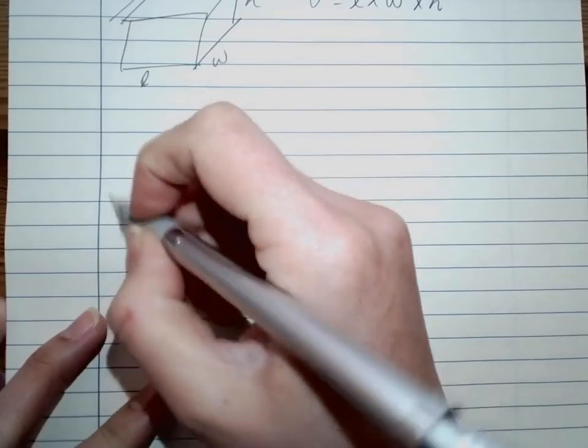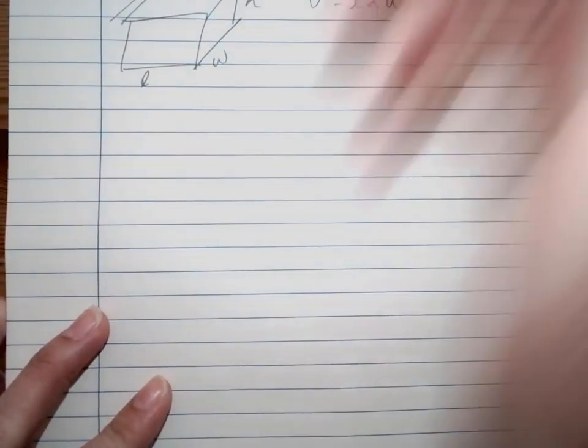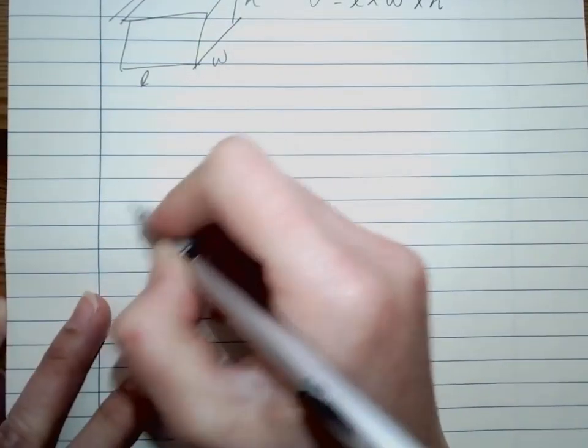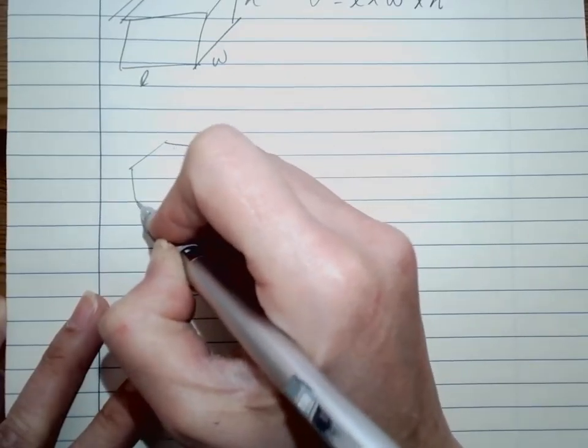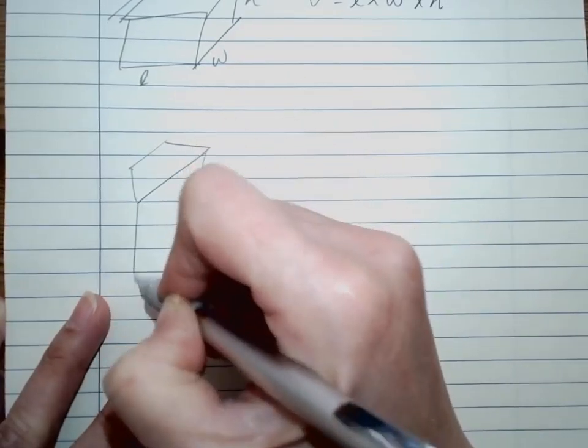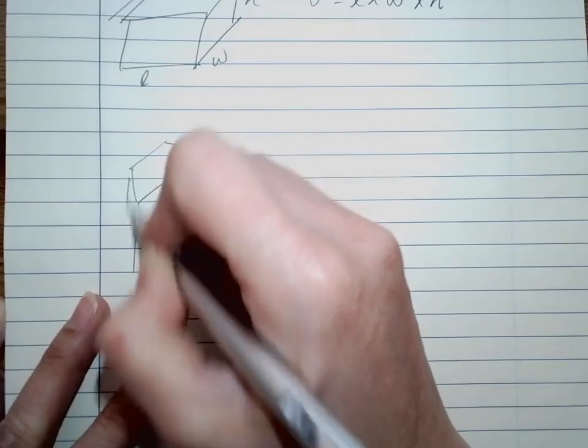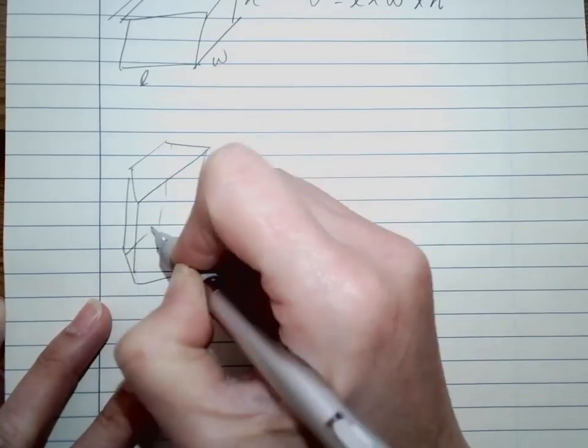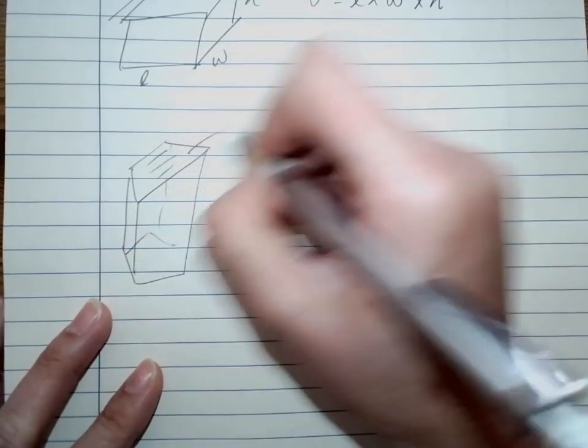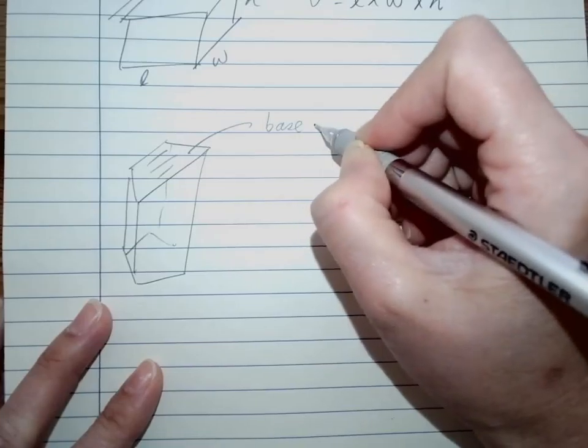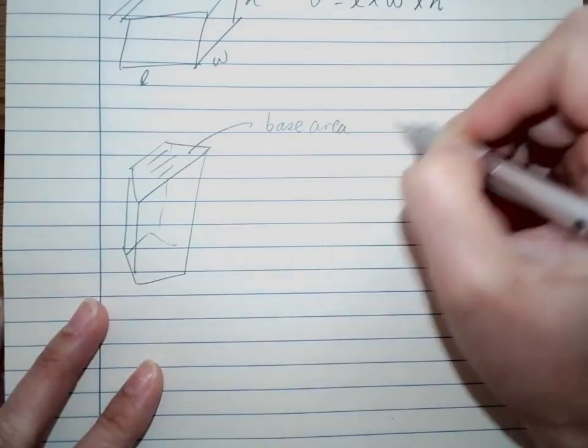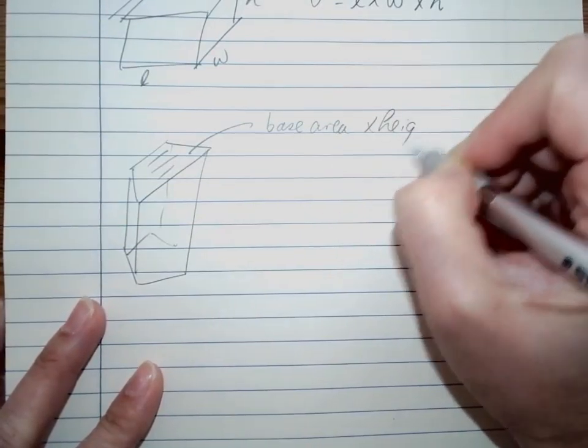If we have an irregular shape here, something like that, we will have the base area times the height.